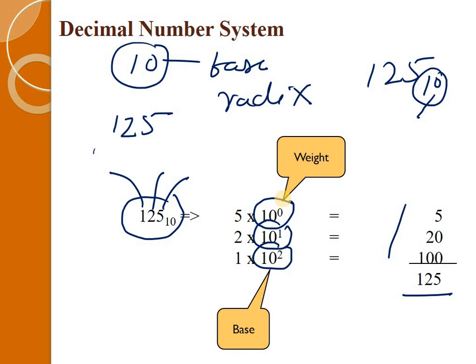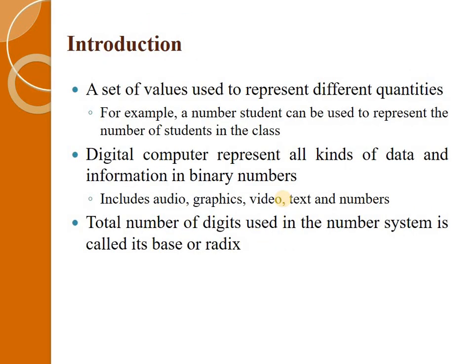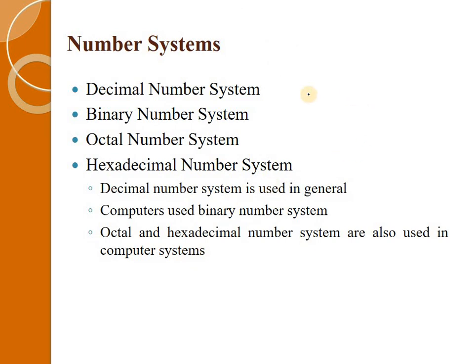The same thing is the replica of different number systems. A number system is a system that represents the number of digits in that system. Our computer will read only 0 and 1, and write only 0 and 1 — that is binary. In this lecture we will learn what 0 and 1 are and how we convert decimal into binary. There are four number systems: decimal, binary, octal, and hexadecimal.